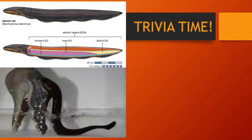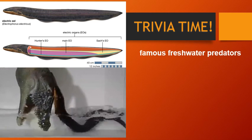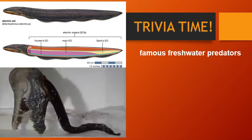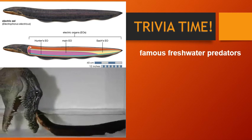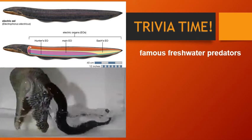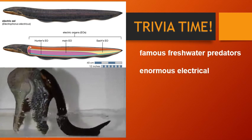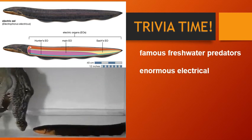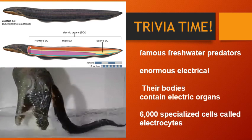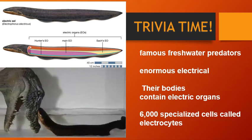Trivia time! Do you know these freshwater predators? These are electric eels. These famous freshwater predators get their name from the enormous electrical charge they can generate to stun prey and dissuade predators. Their bodies contain electric organs with about 6,000 specialized cells called electrocytes that store power like tiny batteries.